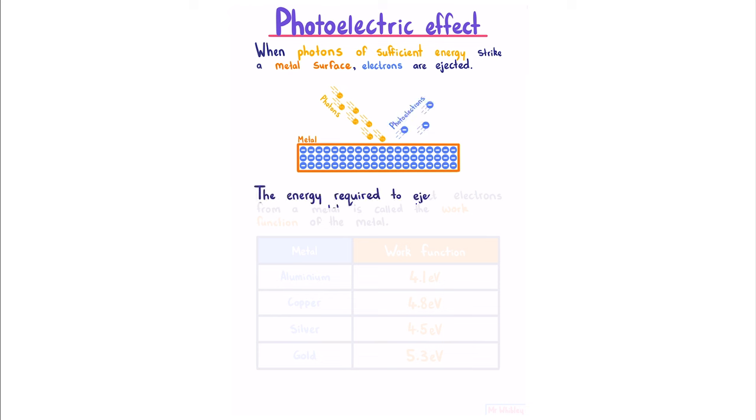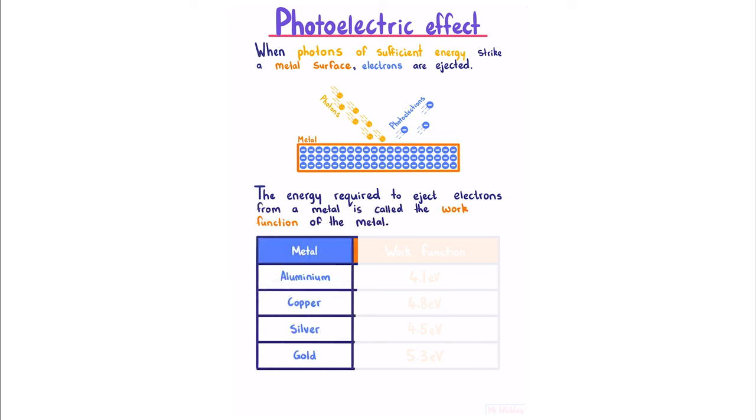The energy required to eject electrons from a metal is called the work function of the metal. Here we have a collection of metals and their respective work functions. The unit for energy we're using is electron volts, which we'll be covering in the next section.